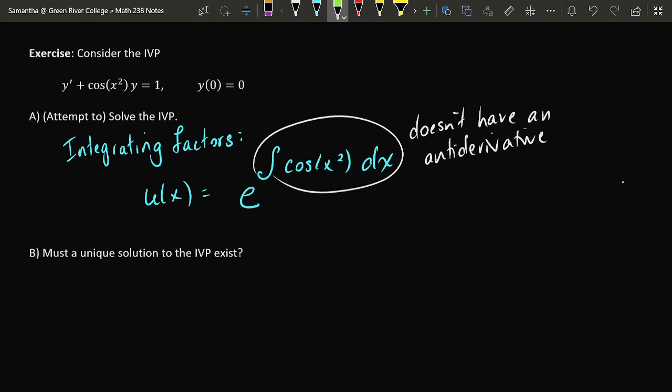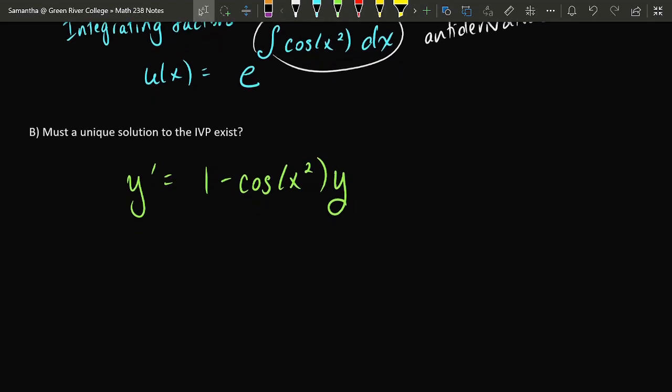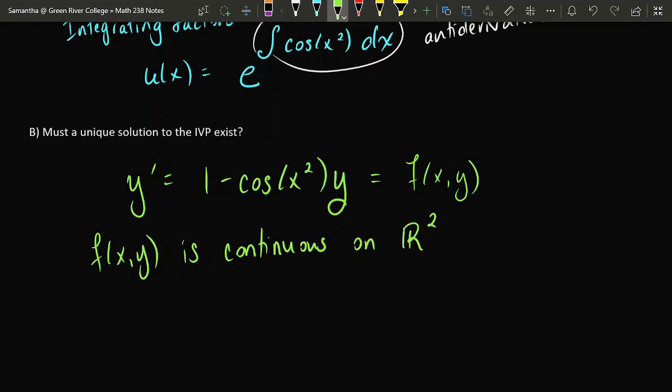To answer this question, I'm going to rewrite this initial value problem in the format suggested by the theorem, where I have y' isolated and everything else on the other side. This expression, 1 - cos(x²)y, is the function f(x, y) which is referred to in the theorem. Now notice that f(x, y) is continuous everywhere.